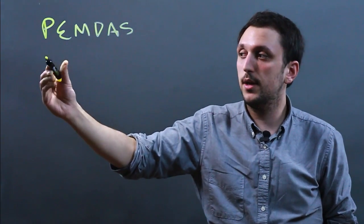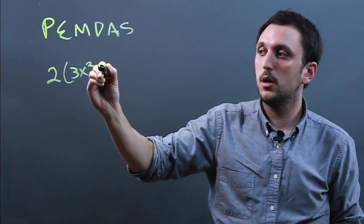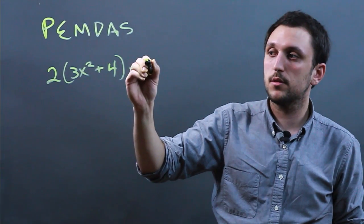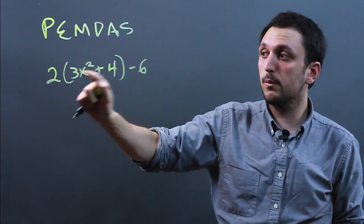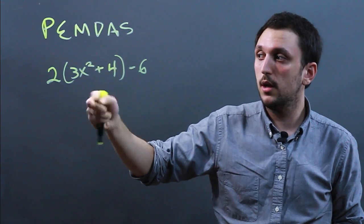So say we have 2(3x² + 4) - 6. Now the way we would read this is 3x² + 4 is the primary equation and we would then multiply 2 by 3x².